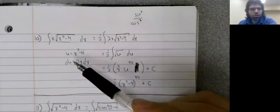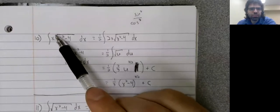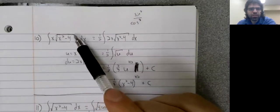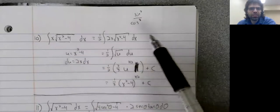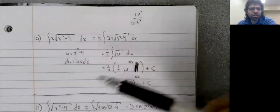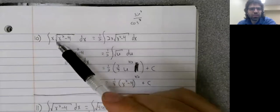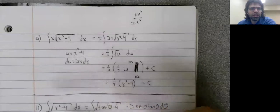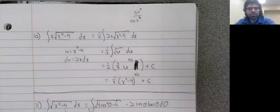But you can also just use u-substitution. You see this composition. You try letting u be the inside function. You have the x that you need, and everything works out fine.